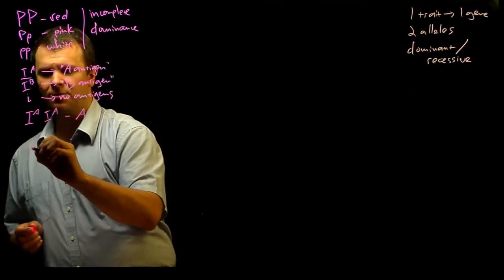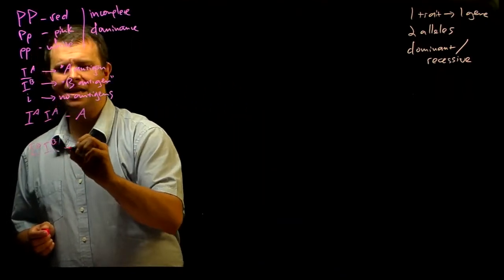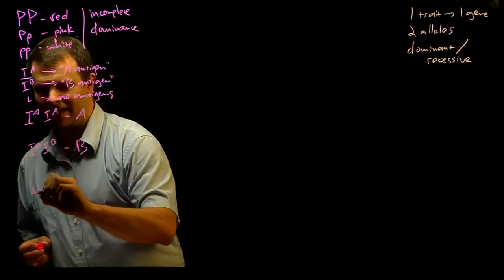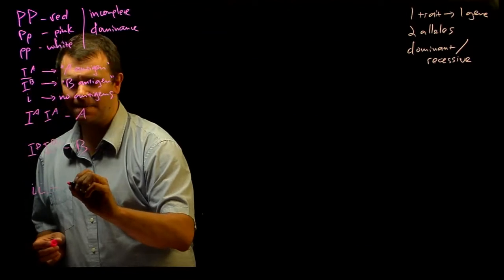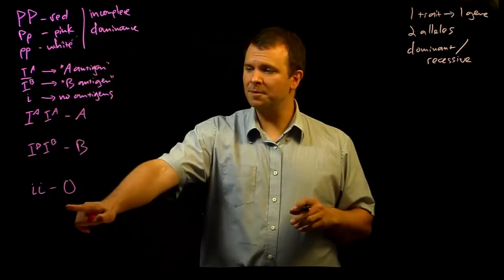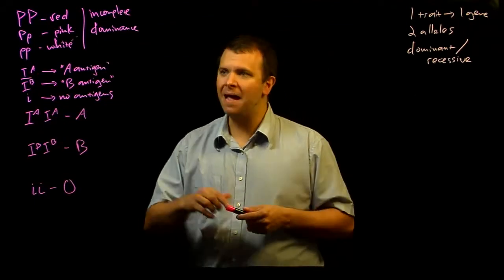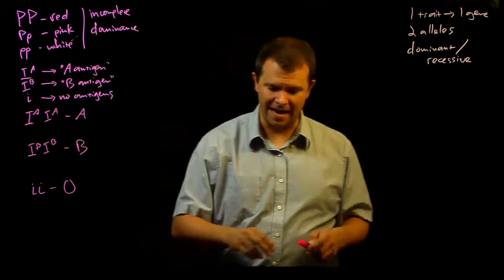If you're homozygous IB, IB, you're going to have type B blood. And if you're homozygous little i, little i, you're going to have type O blood because you won't have any functional enzyme here to make the A antigen or the B antigen.